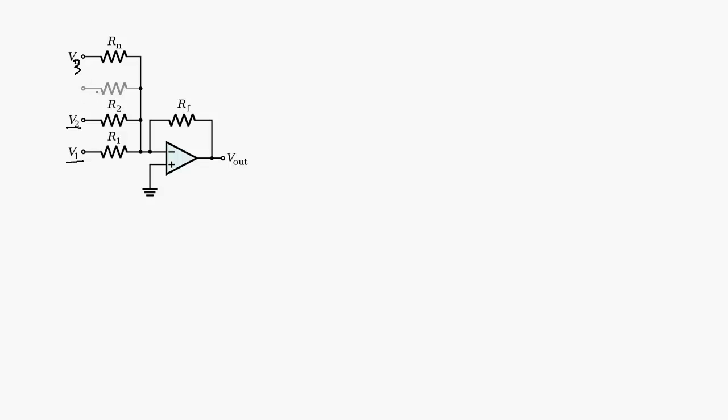And we'll just ignore this signal right here. So we've got three input voltages applied through the appropriate resistors R1, R2, and R3. And then we have a feedback resistor from the output feeding back into the inverting terminal of the operational amplifier.